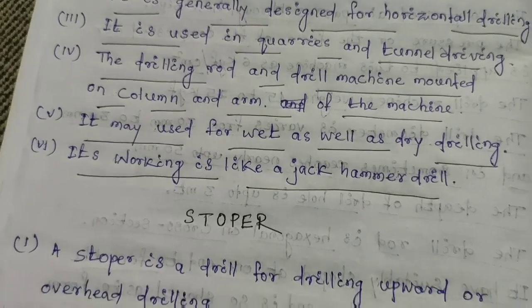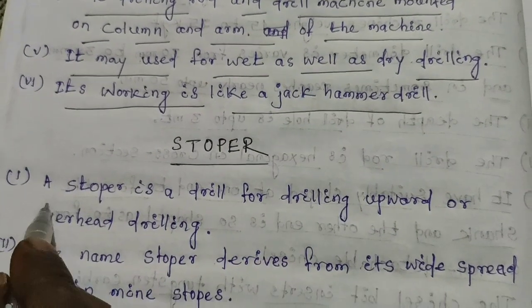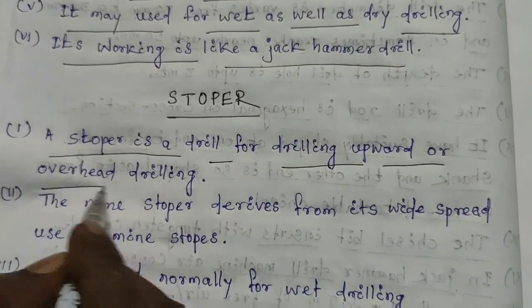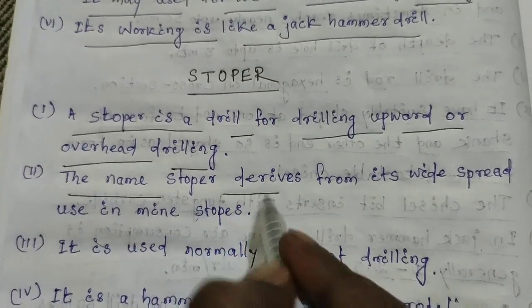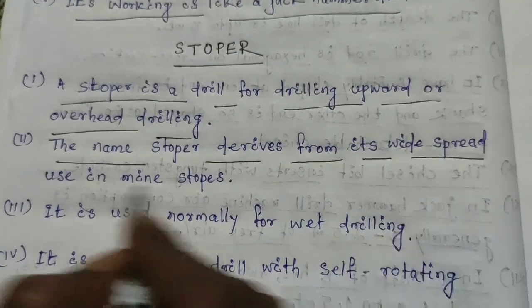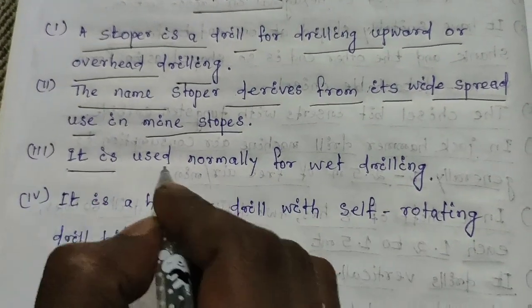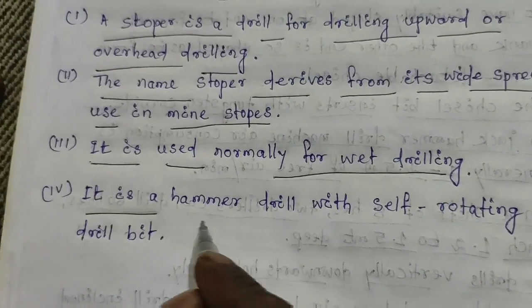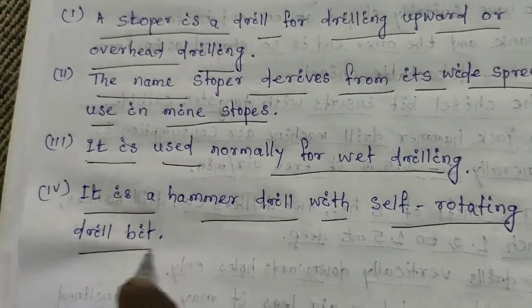Next, let's discuss the stopper. A stopper is a drill used for awkward or overhead drilling. The name stopper derives from its widespread use in mine stopes. It is normally used for wet drilling and is a hammer drill with a self-rotating drill bit.